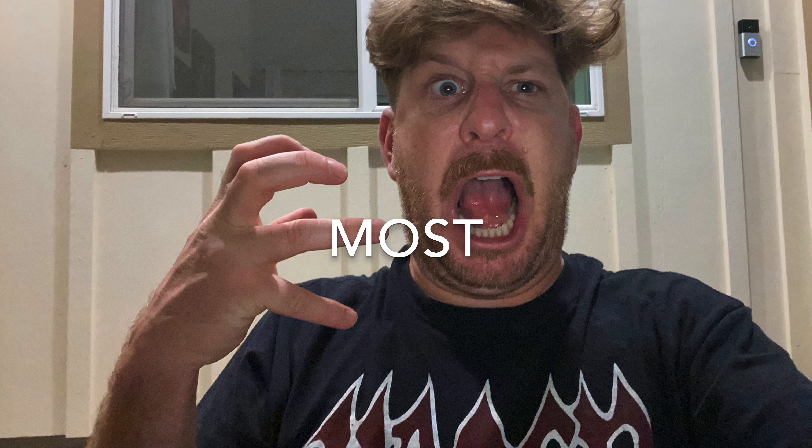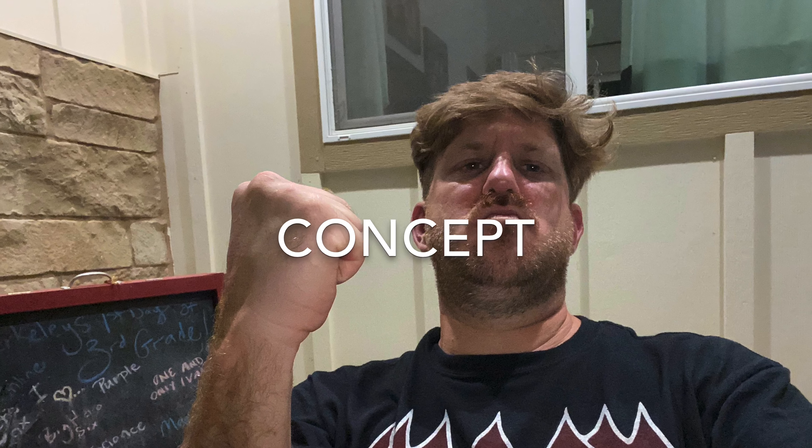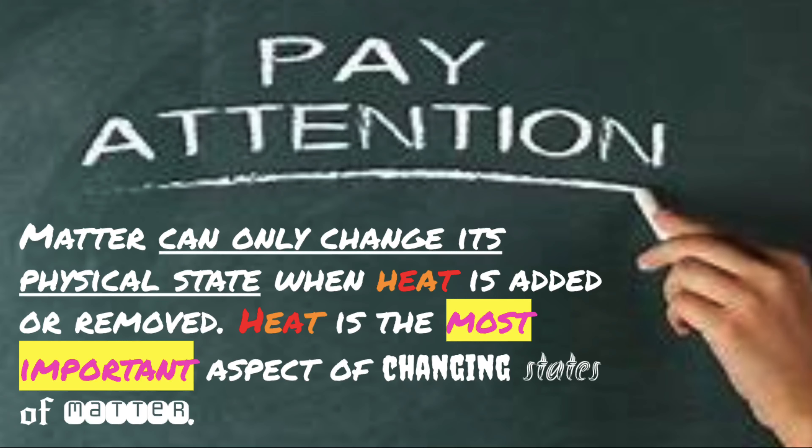So how do we see this in our everyday lives? For me, I like to melt butter on my toast, roast marshmallows over fire, and make grilled cheese sandwiches. So what are some ways you can think of that you use changing states of matter in your everyday life? The most important concept to remember: matter can only change its physical state when heat is added or removed. Heat is the most important aspect of changing states of matter.